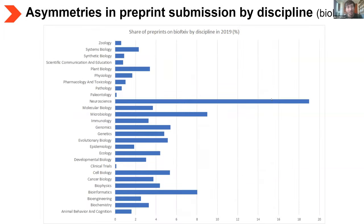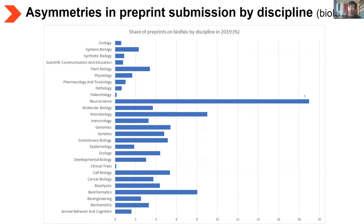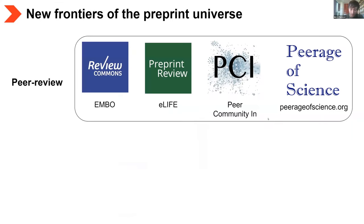Another interesting asymmetry concerns how different disciplines are posting preprints. In this slide you see the share of preprints on bioRxiv in 2019 by contributing field. Strikingly, almost 20% of preprints were contributed by neuroscience. This data is not normalized by field size, but it seems hard to believe that molecular biology represents such a tiny fraction compared to neuroscience. This suggests different fields are more or less likely to post preprints, and it's worth asking why and whether something can be done to normalize preprint culture across disciplines.